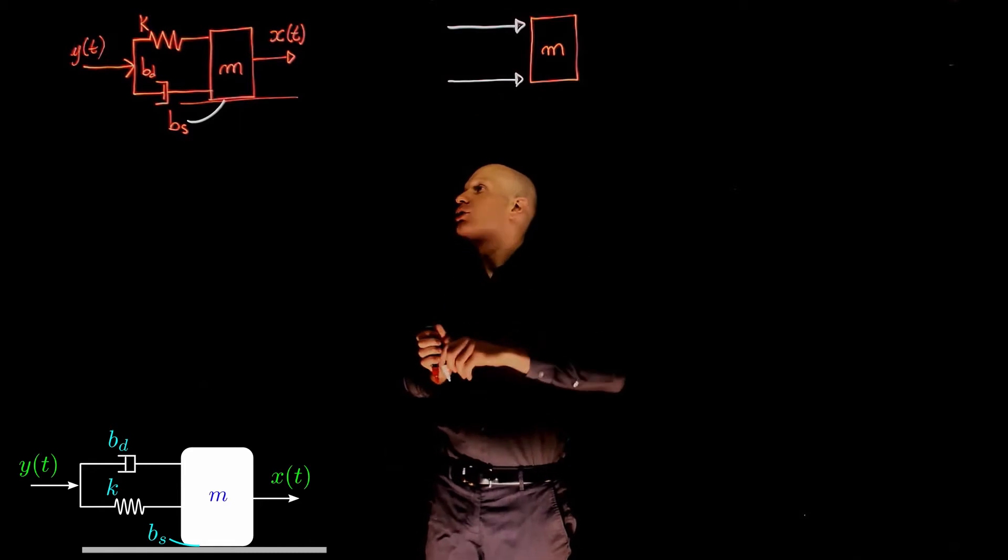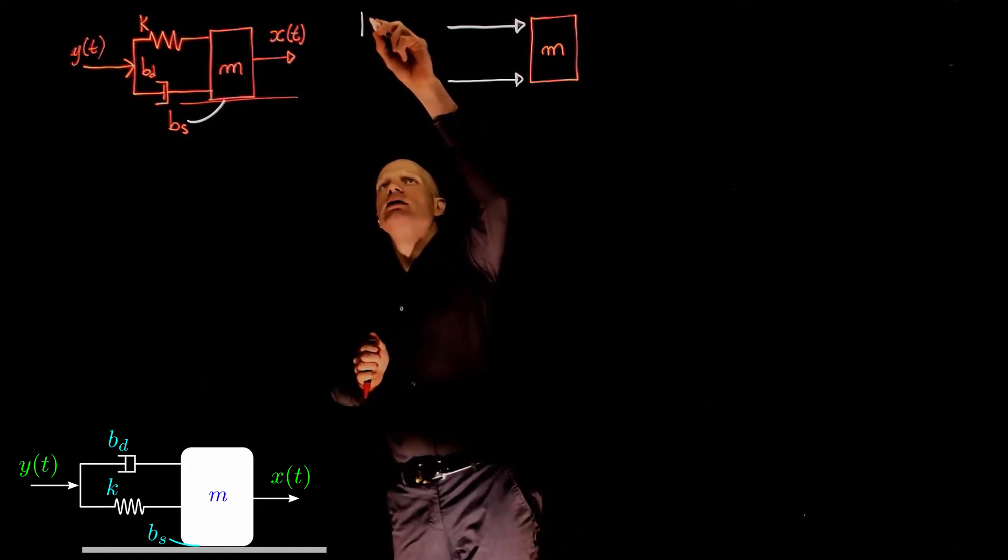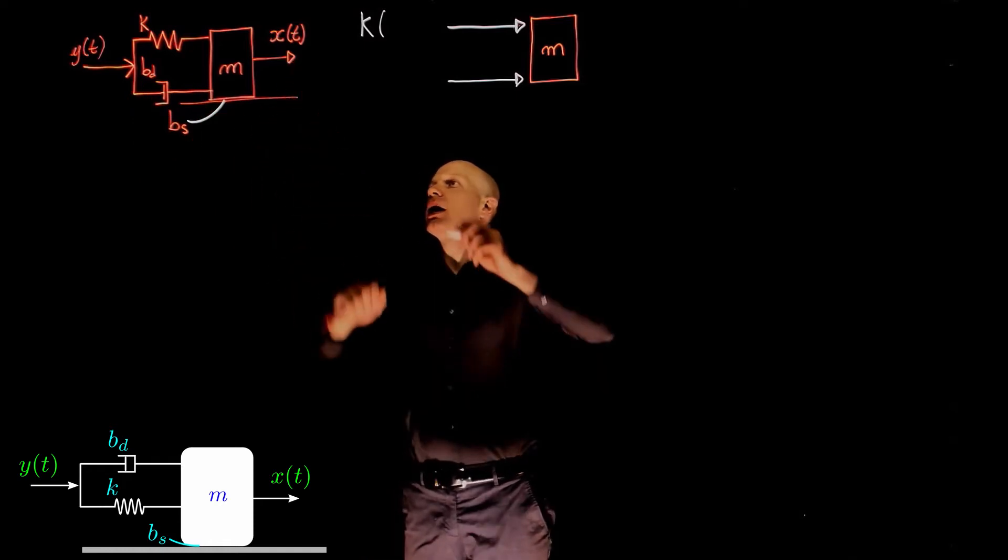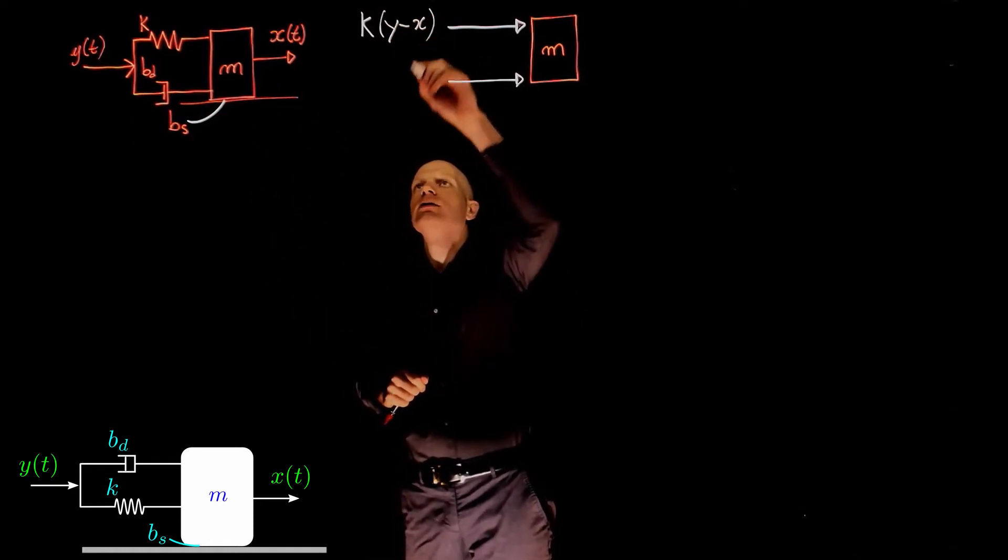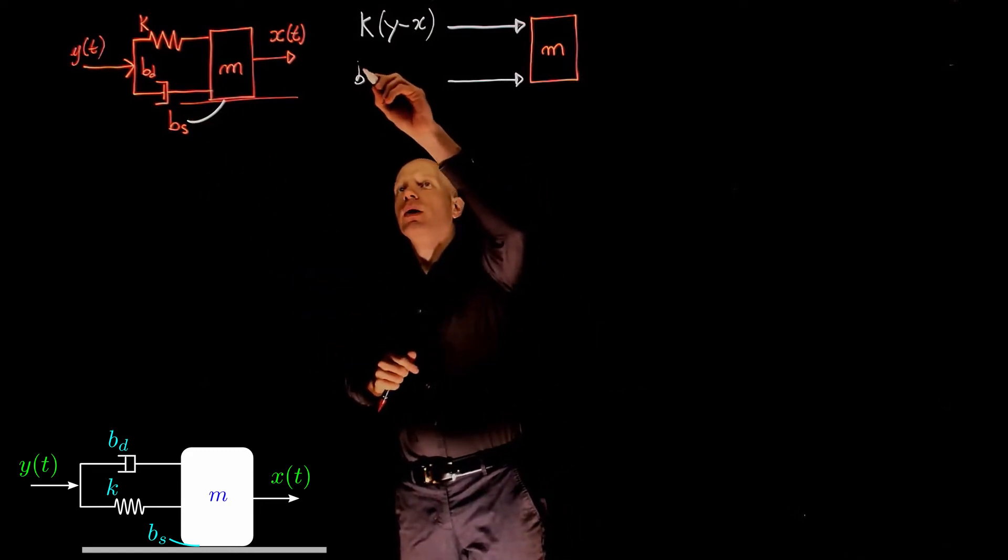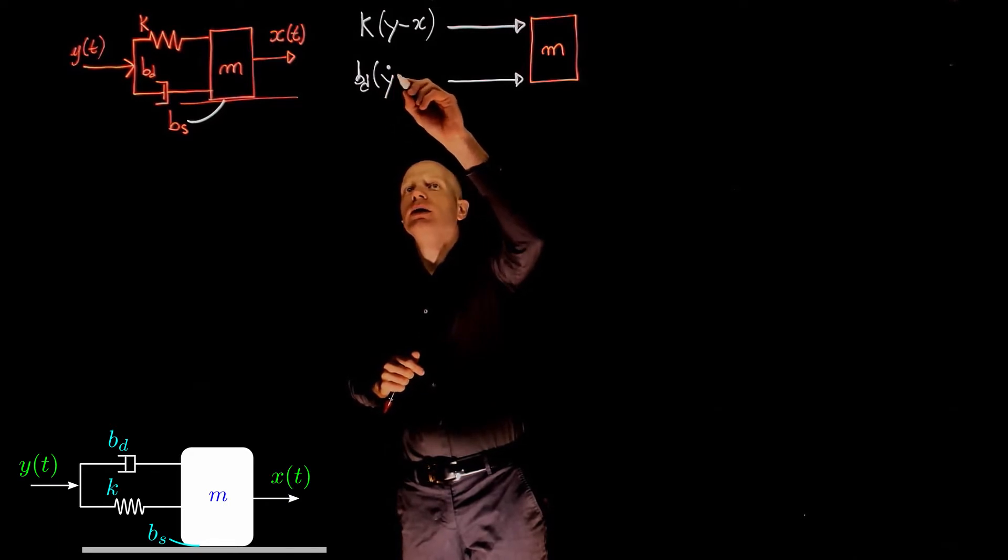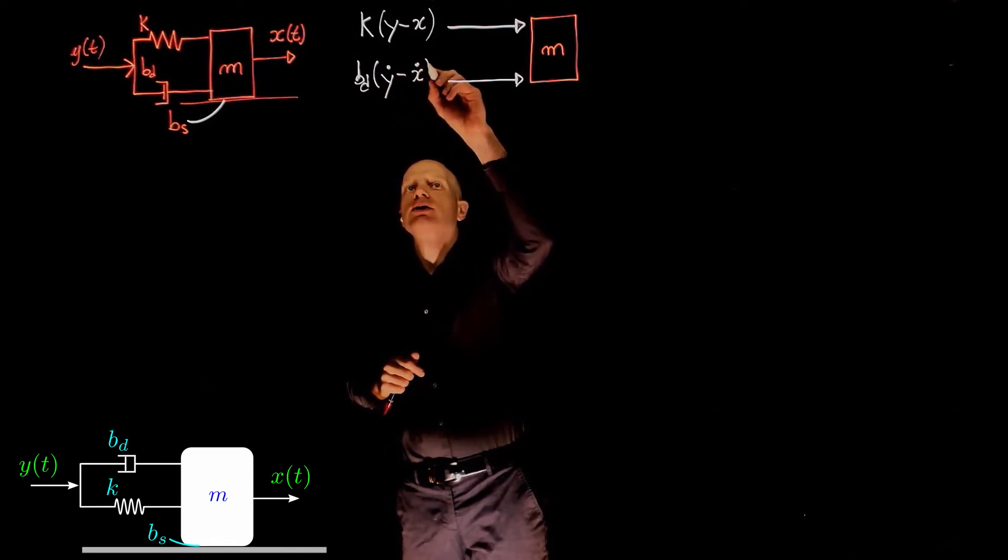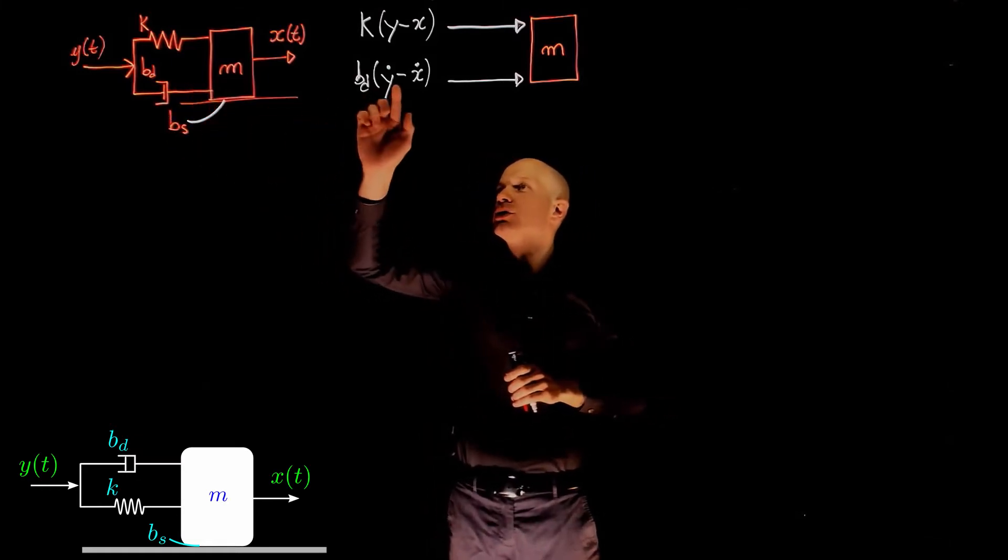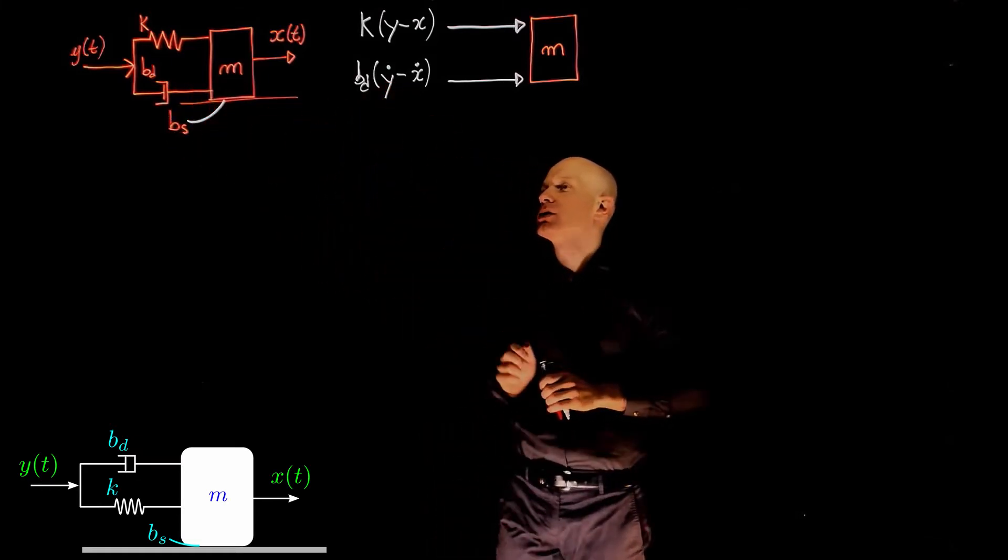The magnitude of the spring force is k times the relative displacement. Note that y will be greater than x, so we can write y minus x. The damper will also apply a force which is now relative to the speed between x dot and y dot, so we have Bd, the coefficient of viscous friction, times y dot minus x dot.